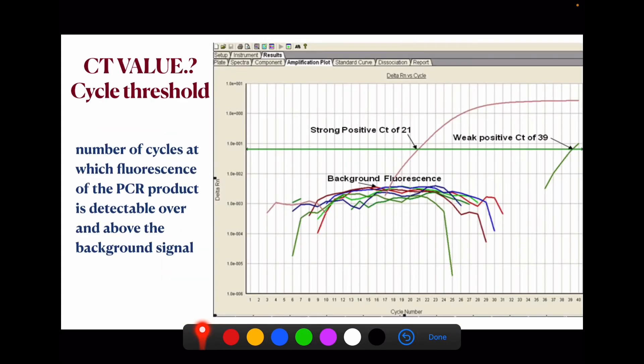So what is the CT value? The CT value is the number of cycles at which fluorescence of the PCR product is detectable over the background signal. Number of cycles at which fluorescence is detectable. Here we can see that after 21 cycles the fluorescent light is detected over the background signal. So after 21 cycles we get enough genetic material to detect over the fluorescence.